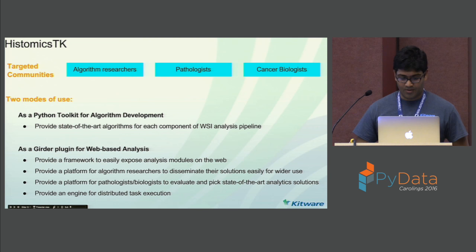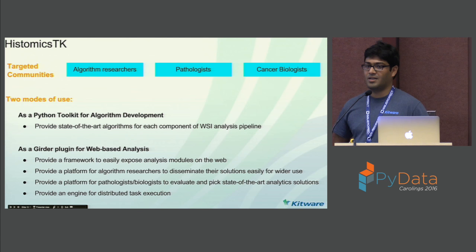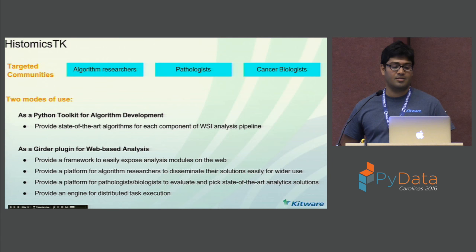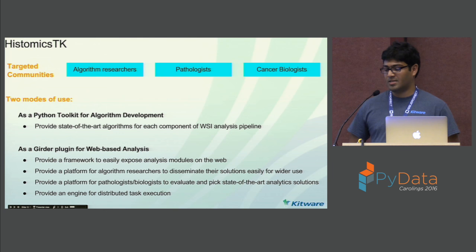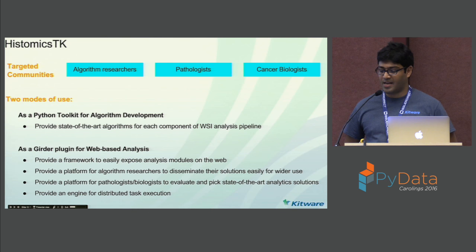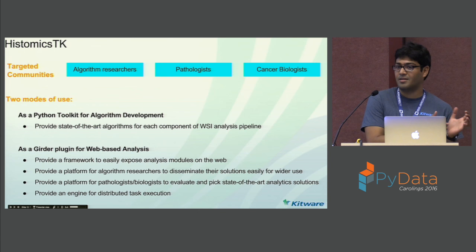Coming to HistomicsTK — HistomicsTK is being developed with three kinds of communities in mind: the algorithm research community, pathologists, and cancer biologists. There are two modes of using HistomicsTK. One is as a pure Python toolkit for algorithm development. It aims to provide state-of-the-art algorithms for each component of the data analysis pipeline, so if you're working on one component, you can use algorithms from HistomicsTK for the rest.